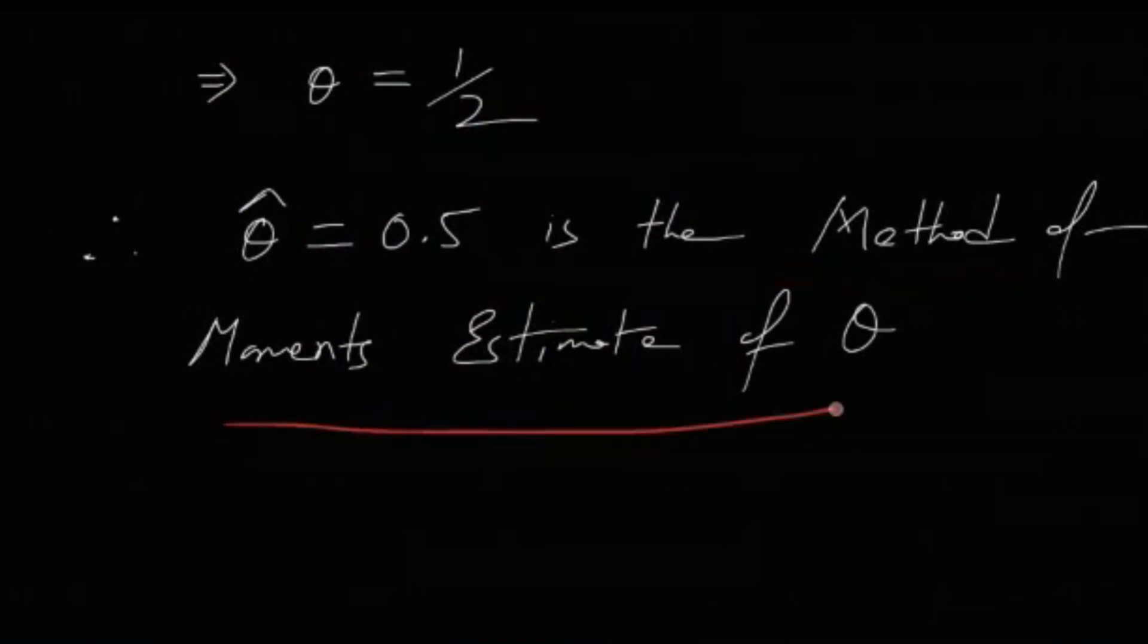Equating population mean with sample mean, we get E(X) = x̄. On equating and simplifying, solving for theta we get θ̂ = 0.5. This is the method of moments estimate of theta.